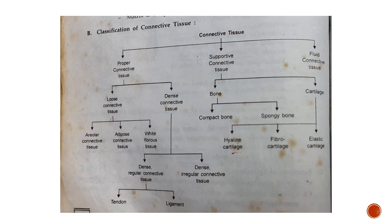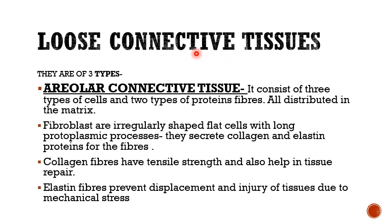First we take the proper connective tissue: loose connective tissue. The first type is areolar connective tissue. It consists of three types of cells and two types of protein fibers, all distributed in the matrix. Fibroblasts are irregularly shaped flat cells with long protoplasmic processes; they secrete collagen and elastin proteins for fibers.